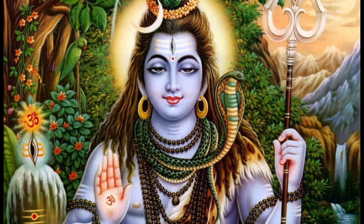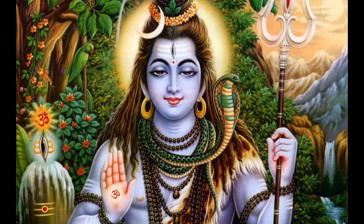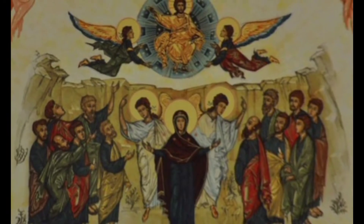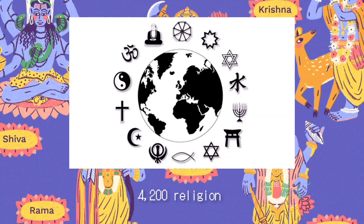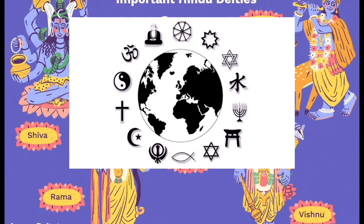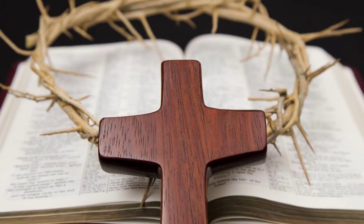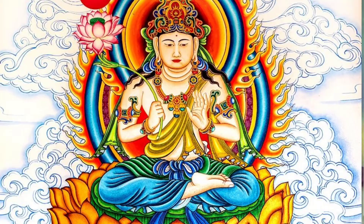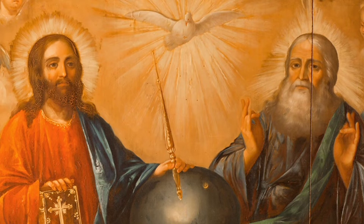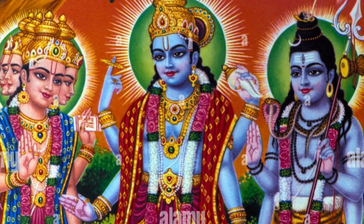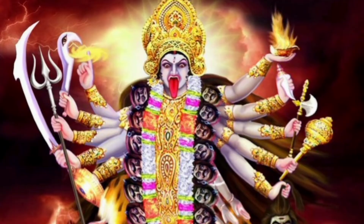Religion is a very important thing in one's life. Every individual is free to choose their own religion. There are roughly 4200 religions in the world, but mainly there are four: Islam, Christianity, Hinduism, and Buddhism. This video will present to you the comparison between Christianity and Hinduism.